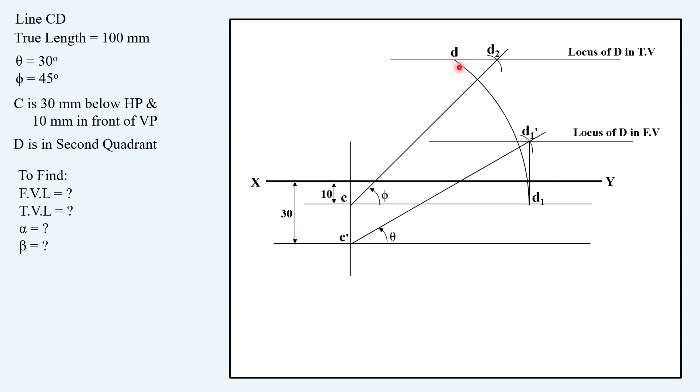Similarly, projecting D2 up to opposite view, so to C dash. Taking this point D2 dash, keeping compass on C dash, and radius C dash D2 dash in your compass, and drawing an arc until it meets locus of D in front view. Corresponding name D dash, joining C dash D dash, obtaining the front view. This is the required solution.